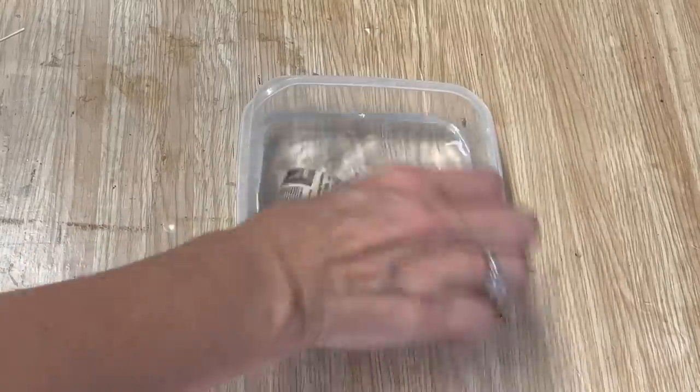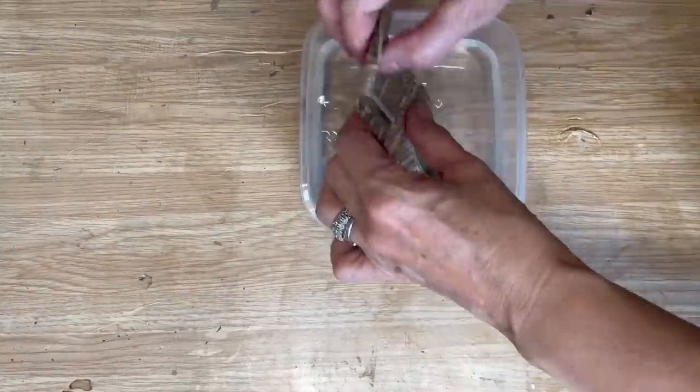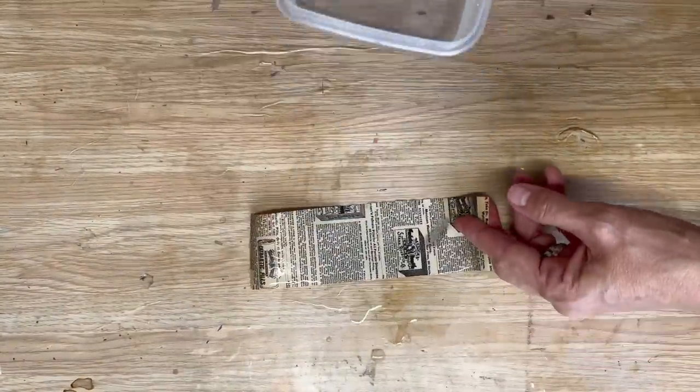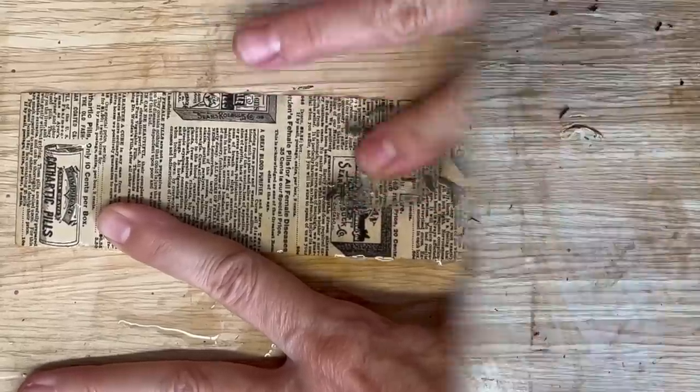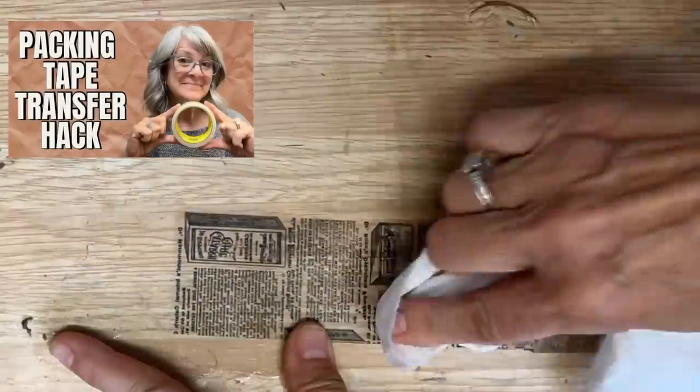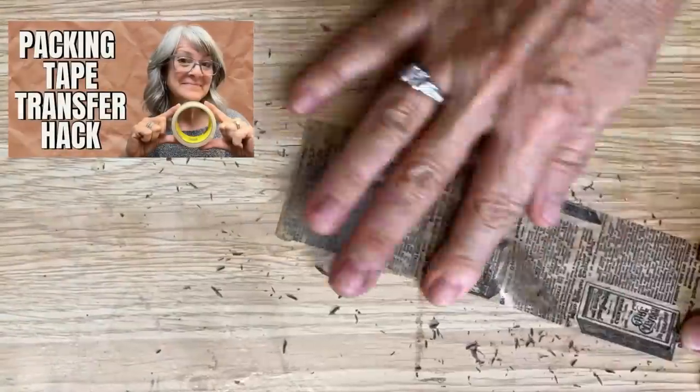After it soaks for 15 or 20 minutes, we're gonna rub off the paper and you're going to be left with a translucent transfer on this packing tape. I have a full tutorial where I did this process right from start to finish. The possibilities are endless and it's so fun.